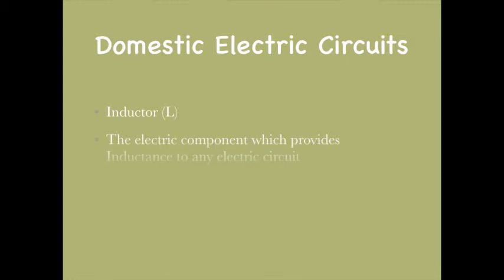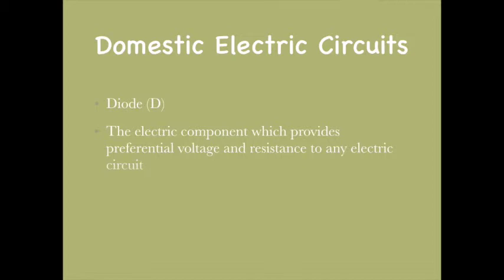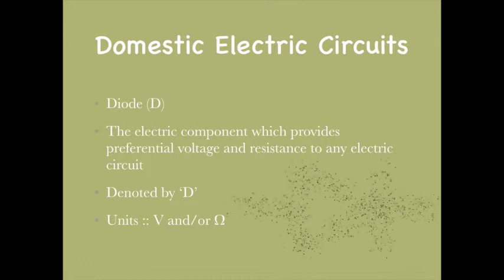The inductor is an electrical component which provides inductance to an electrical circuit. It is denoted by L and the units are henries (H). The next component is the diode, which provides preferential voltage and resistance to any electrical circuit. It is denoted by D and has units of volts (V) or ohms (Ω) depending on the type.